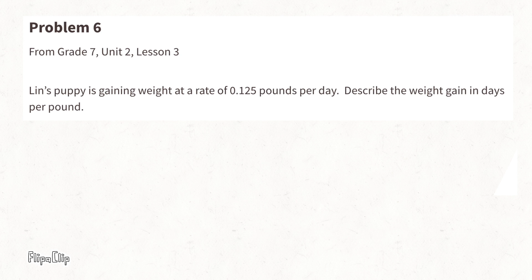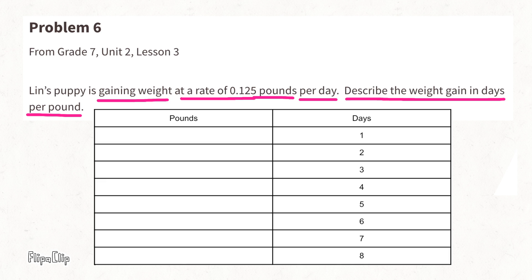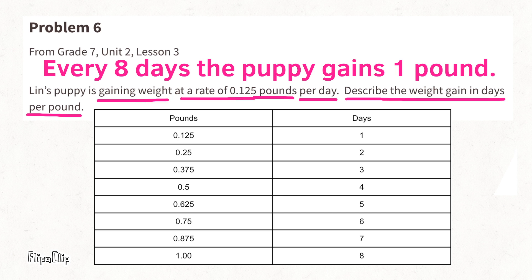Problem 6 (from Grade 7, Unit 2, Lesson 3): Lynn's puppy is gaining weight at a rate of 0.125 pounds per day. Describe the weight gain in days per pound. Using a chart with days 1–8 and pounds increasing by 0.125 per day, on the eighth day there is 1 full pound gained. Since 0.125 is one-eighth of a pound, after eight days the puppy gains eight-eighths, or one full pound. The rate is 8 days per pound.